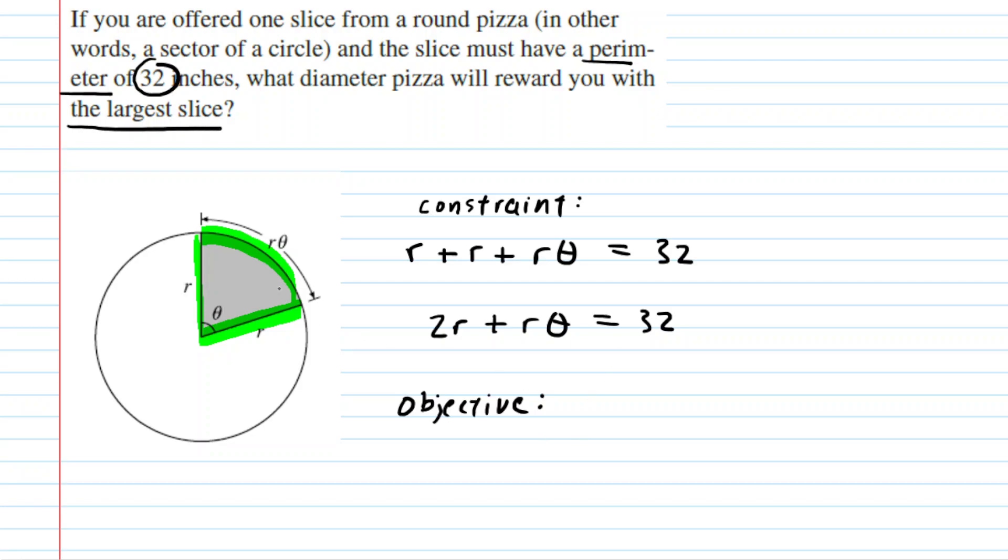What that means is that we want our slice of pizza to have the largest possible area. The area of a sector, which is basically a slice of a circle, the area of a sector is equal to one-half times the radius squared times the central angle theta.